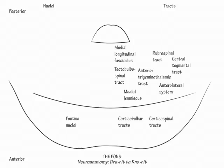Next, label the cerebrospinal fluid space of the pons as the fourth ventricle, and show that the neurobehavioral central gray area surrounds it here and throughout the rest of the neuroaxis. In the midbrain, this area is called the periaqueductal gray area.